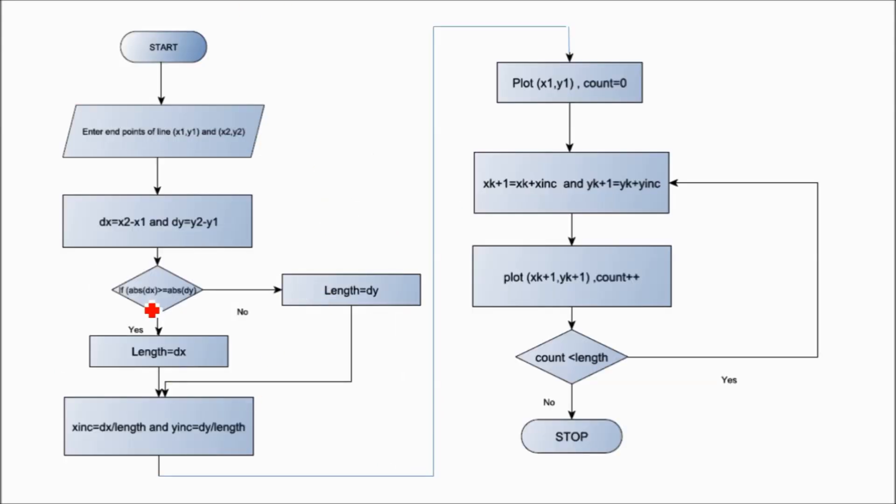This is the flowchart of DDA line drawing algorithm. Initially, accept the inputs. Then calculate dx and dy. Check for whether dx is greater or dy. Based on that, length is dx or dy. x increment is dx upon length, y increment is dy upon length. You have to plot the first point. And this is the recursive calculation. Calculate recursively till the count becomes less than or equal to length.